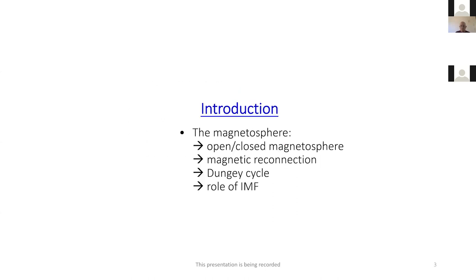In the introduction I will describe the magnetosphere, the notion of open versus closed magnetosphere, giving some historical perspective. I will show that magnetic reconnection is the main driver of magnetospheric dynamics through what is known as the Dungey cycle, and how this is regulated by the IMF — the interplanetary magnetic field — and how the Dungey cycle changes depending on the polarity of the IMF.